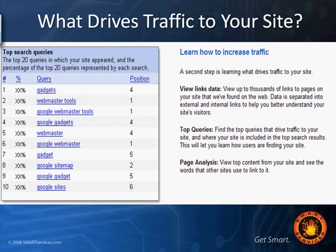A second step is learning what drives traffic to your website. You're going to get better search results not only if you have links to your website, but if lots of websites have links to you. You can view link data showing what links are internal and external. You can also see the top queries — the terms people are using to get to your website. If your website just has generic terms like 'home and auto insurance,' that's not going to be a top query. But if you have a specialty niche market or are targeting a specific geographical area — like 'great hometown insurance in Beaverton, Michigan' — that's going to draw much more relevant traffic from your area.